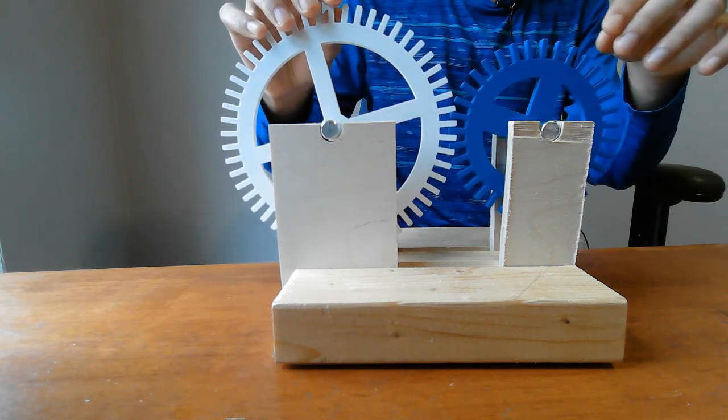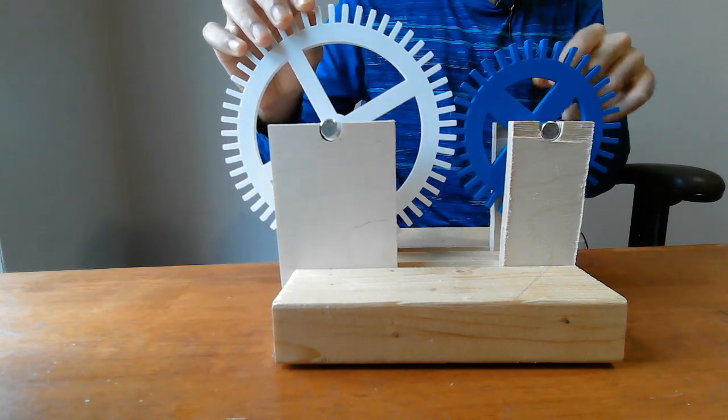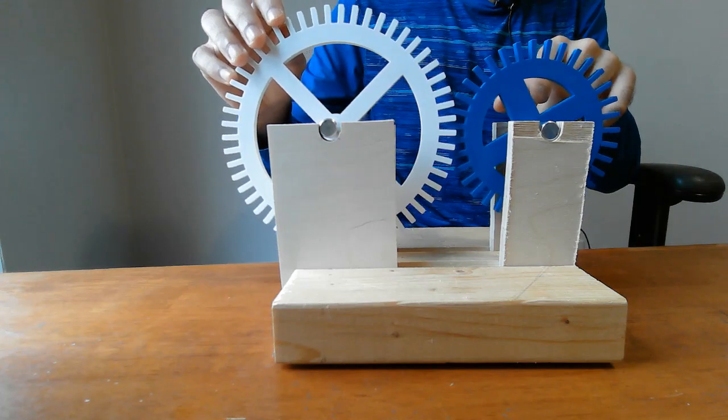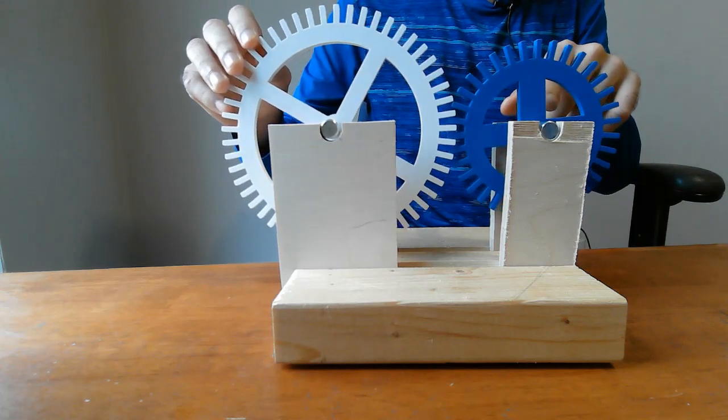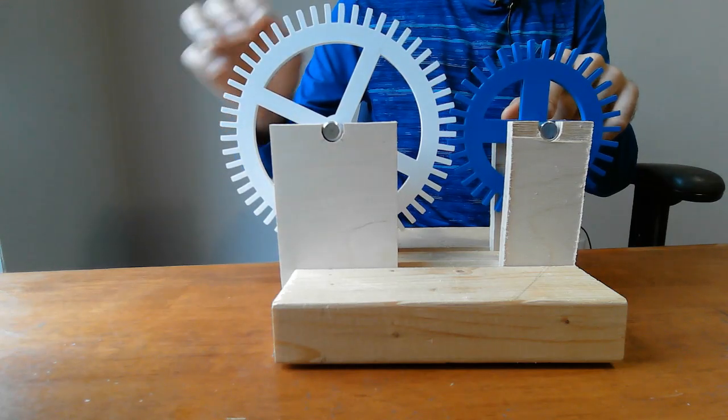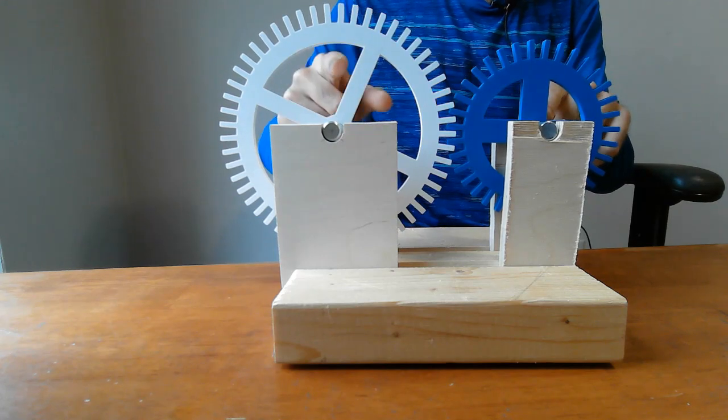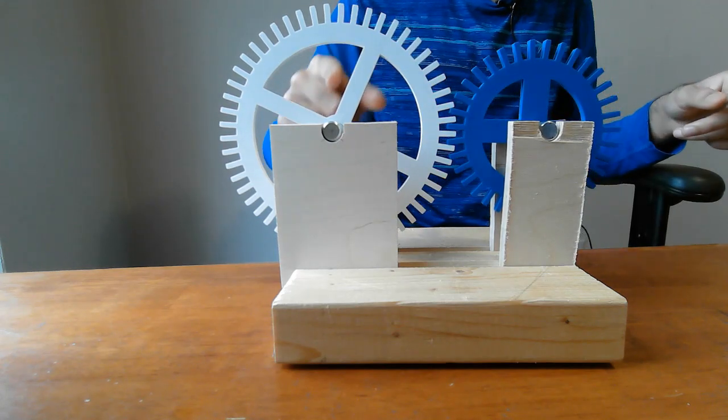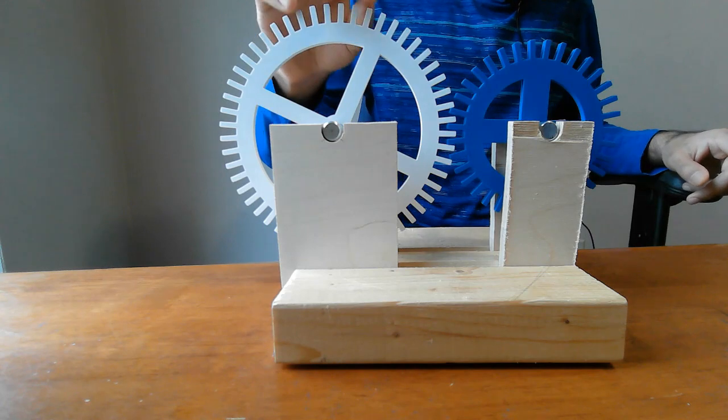So I'm spinning the gear. You can see this one is about to reach vertical position, and there it is. It's reached vertical position first while this slat is still angled.